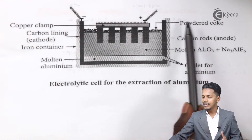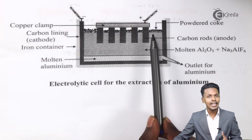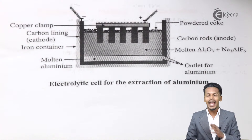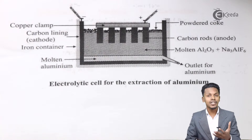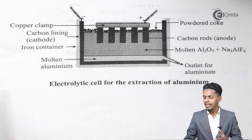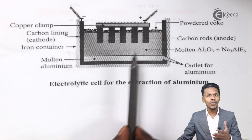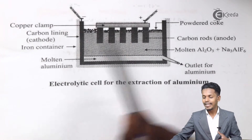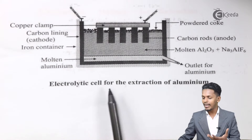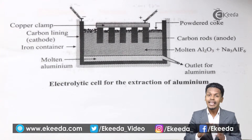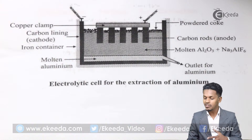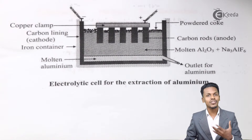You can see there is powder ore on the surface of the electrolyte or solution. The reason we are adding this is to avoid the oxidation of the aluminum, and it is also used to prevent the escape of heat. Now, what are the reactions that take place in this cell? This is the most important thing — let us understand those reactions that take place in the electrolytic cell for the extraction of aluminum.